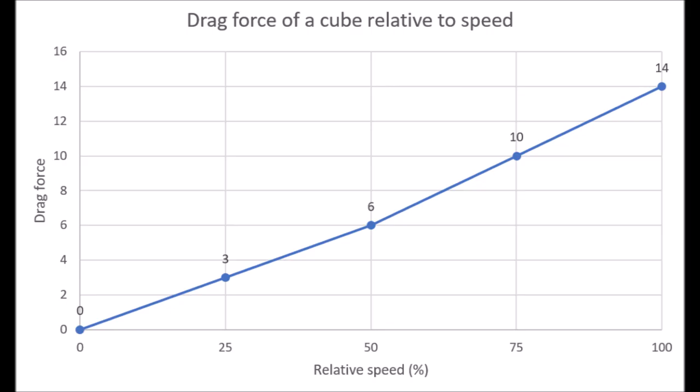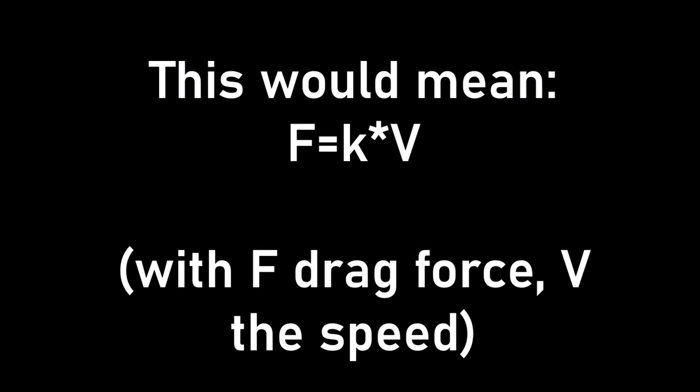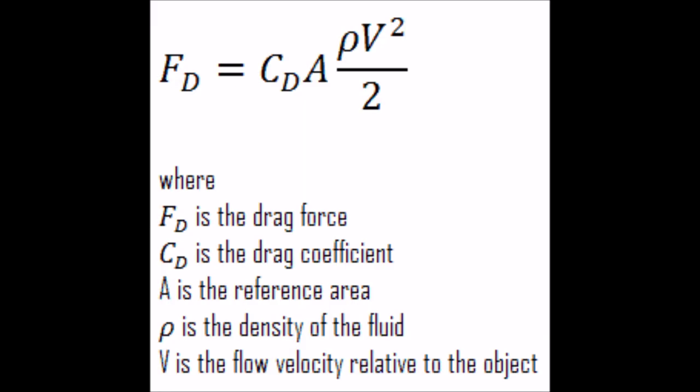And from our results, we can distinguish a straight line. This would mean that wind resistance of an object is directly proportional to the wind speed. But, actually, here is the formula of the wind force, and we see that it is proportional to the velocity squared. We also see the mass density of the fluid, the surface area, and the drag coefficient.